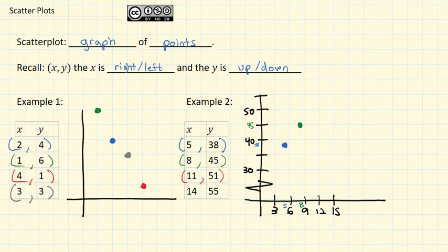The next point is 11, 51. So we'll go to 11. And 51 is just above the 50. And we get a point right there.